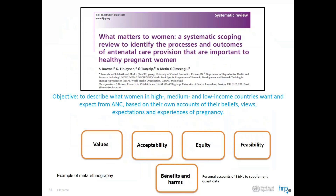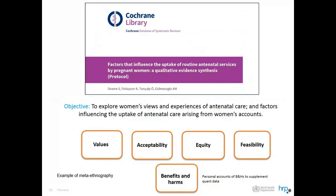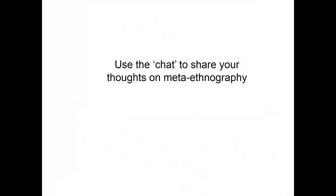Here are a couple of meta-ethnography examples. One done as part of a Cochrane and WHO guideline is called 'What Matters to Women' — a systematic scoping review that is actually a meta-ethnography. It determined what mattered to women about their antenatal experience, covering values, acceptability, equity, feasibility, and personal accounts around benefits and harms to supplement quantitative data. There's also a protocol in the Cochrane Library — factors influencing uptake of routine antenatal services by pregnant women — which is a meta-ethnography with a nicely described protocol.